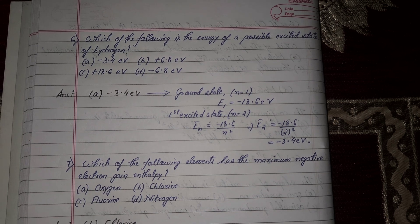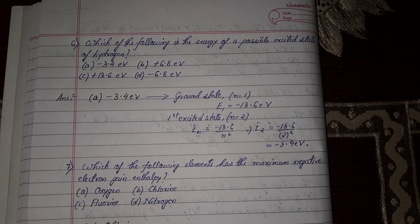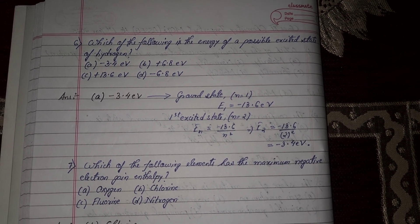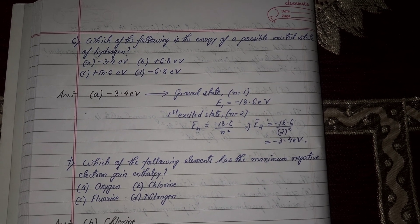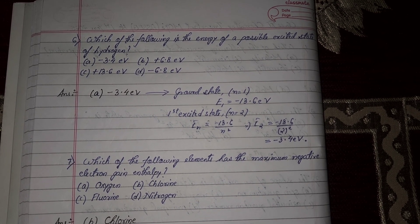Next question number 6, which of the following is the energy of a possible excited state of hydrogen? Option number A, minus 3.4 electron volt will be your correct answer.